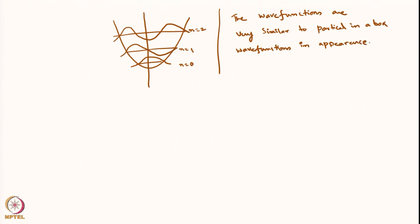The energy value is E_n equals (n + 1/2) h nu. We must always remember that these harmonic oscillator wave functions look similar to particle-in-a-box wave functions in appearance, but they are not mathematically the same, because these are Gaussian functions multiplied by Hermite polynomials, whereas those are sinusoidal functions.